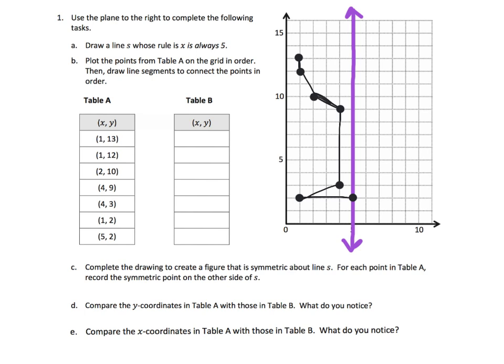And now step C says: complete the drawing to create a figure that is symmetric about line S. I'm going to do that in blue.